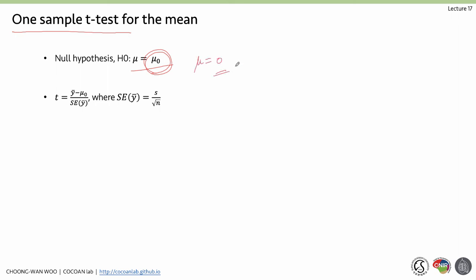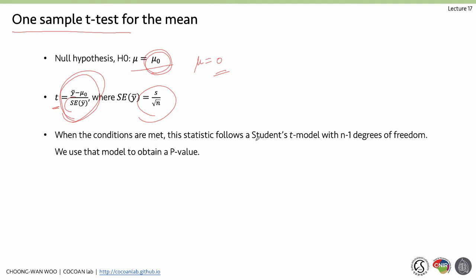Now we can do the one-sample t-test for the mean, which is a very popular method. The null hypothesis is mu equals mu-zero. We often test against zero, but you can use any mean value. The t-value is calculated as y-bar minus mu-zero divided by the standard error of the mean, where the standard error is the sample standard deviation divided by square root of n. When conditions are met, this statistic follows the Student's t-model with n minus 1 degrees of freedom, and we use that model to obtain a p-value.